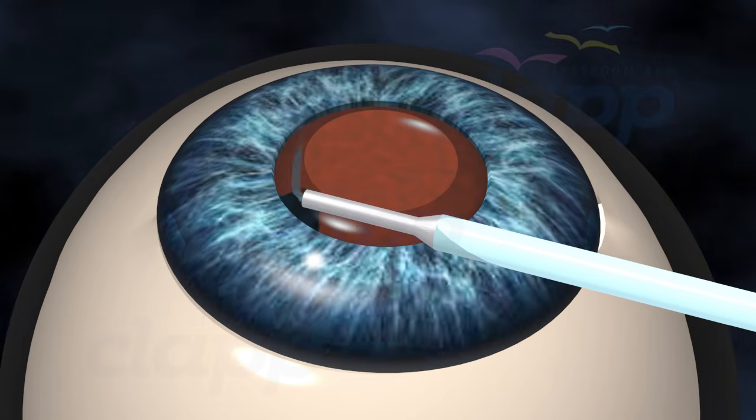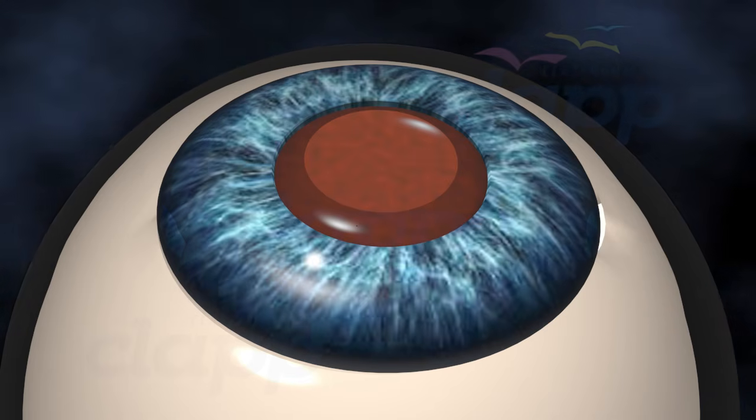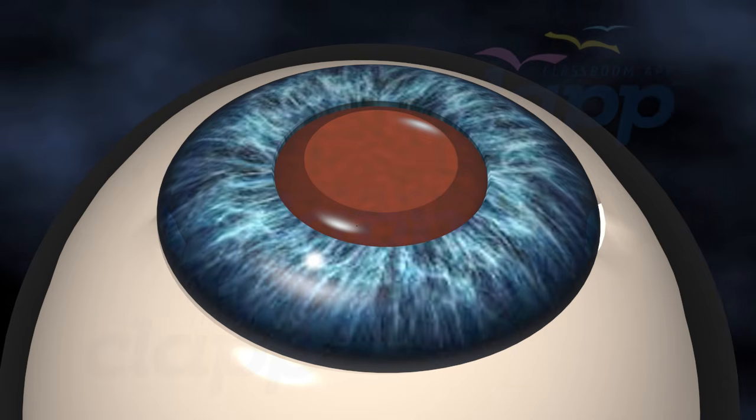The red color can be seen after the cataract lens removal. This orange-reddish color is the reflection from the eye's retina.